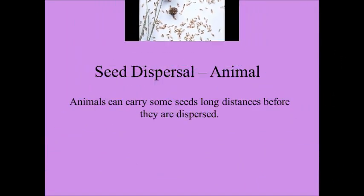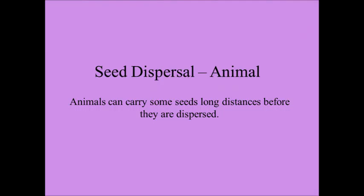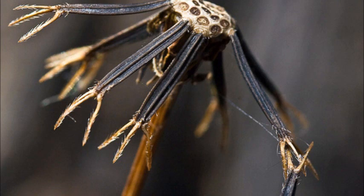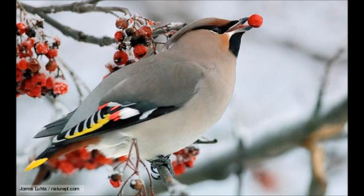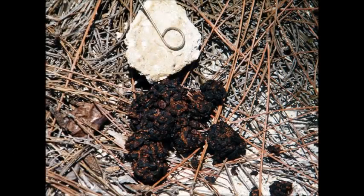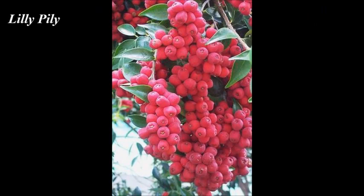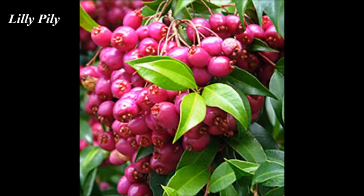Animals can carry some seeds long distances before they are dispersed. Some seeds have barbs or hooks that can hang on to animals' fur or feathers. Seeds can also be dispersed when animals eat brightly colored fruit with indigestible seeds. They then deposit their excrement in a new area. This is possible for the lily pilly as it has colorful fruit which attracts birds.